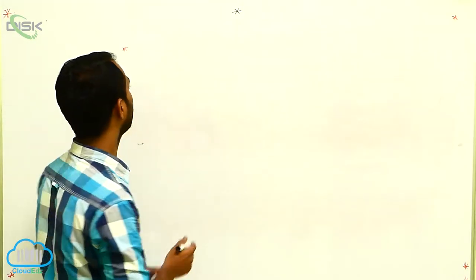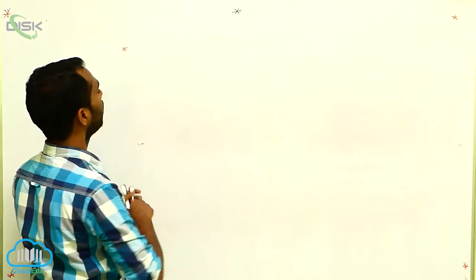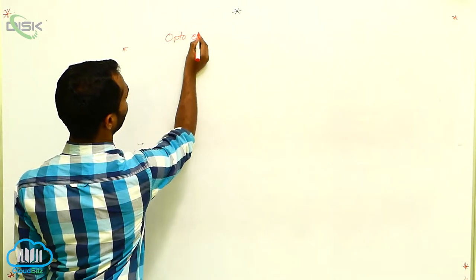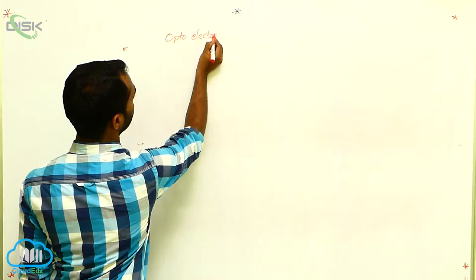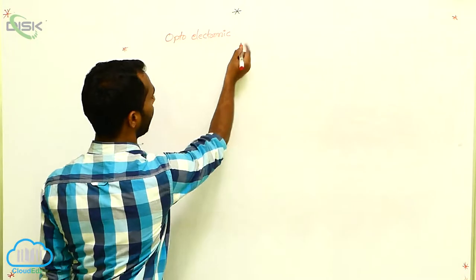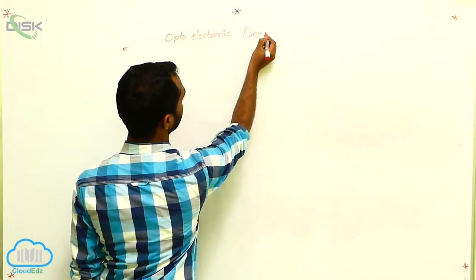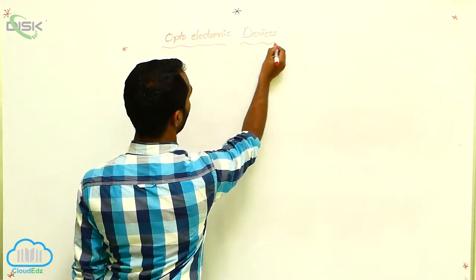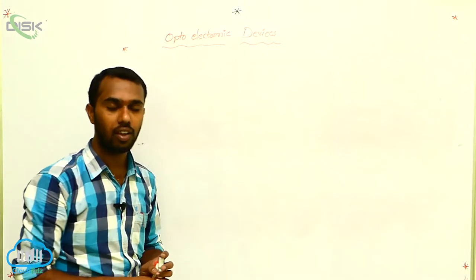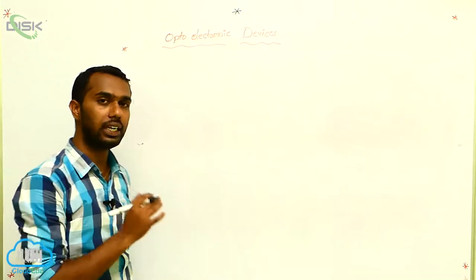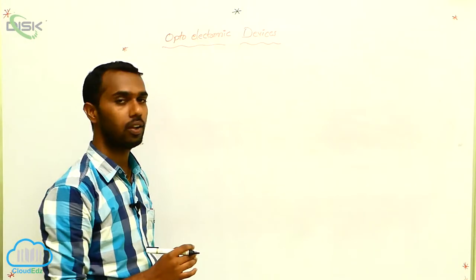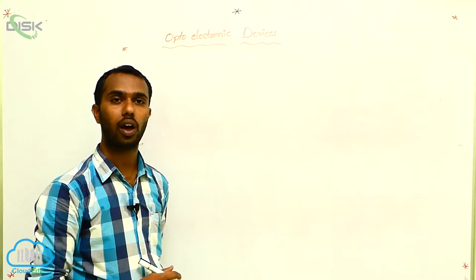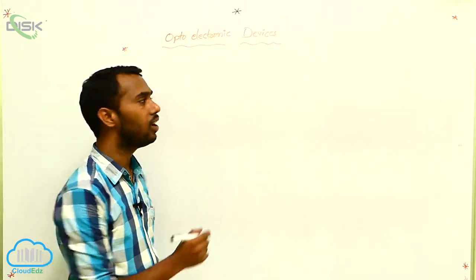Optoelectronic Devices. In this topic, we discuss about three devices: one is a photodiode, next one is a solar cell, and next one is a LED.